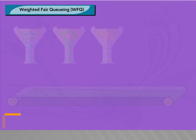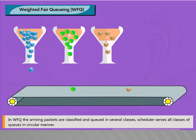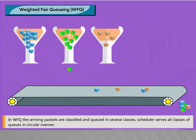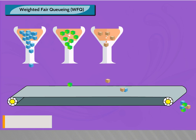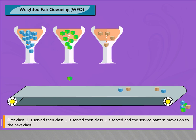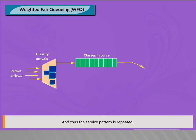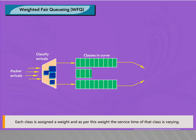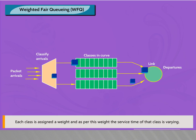Round robin queuing. In round robin queuing, packets are sorted into classes and the round robin scheduler alternately switches the transmitting link among the classes. Weighted fair queuing (WFQ). In WFQ, arriving packets are classified and queued in several classes; the scheduler serves all classes in a circular manner — first class one, then class two, then class three, and so on, repeating the service pattern. Each class is assigned a weight, and the service time of that class varies according to its weight.